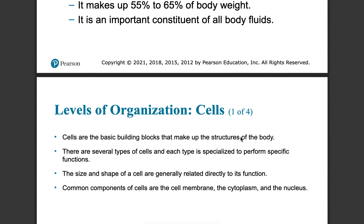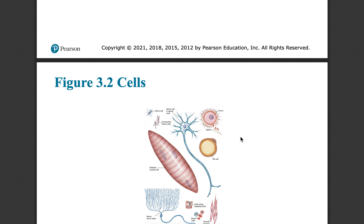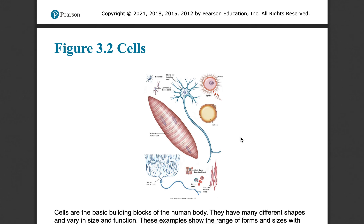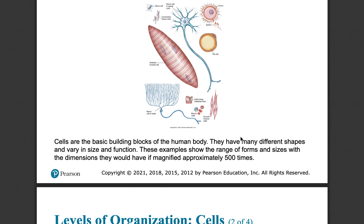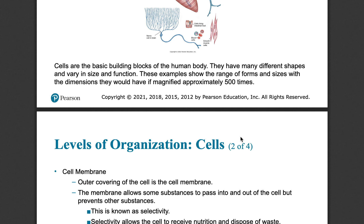As we work our way up, we start building cells. Cells start having a function — atoms just kind of are there and react with each other, but a cell is going to have a function, a goal, something it's trying to achieve. Cells range in size, functionality, shape, and appearance depending on what function they serve.